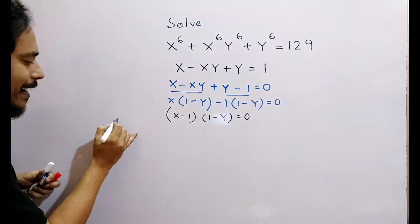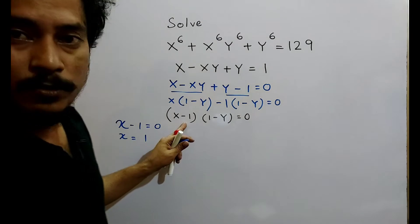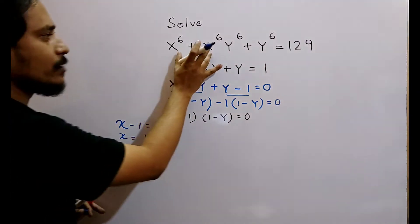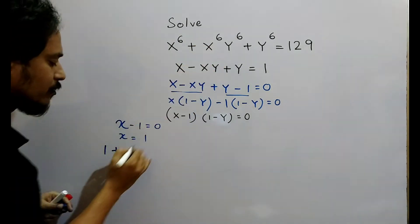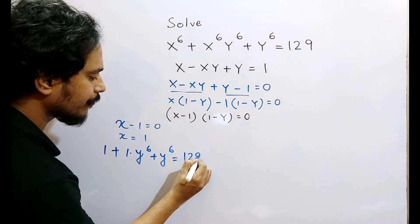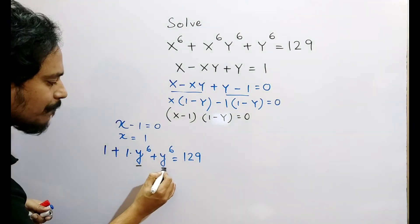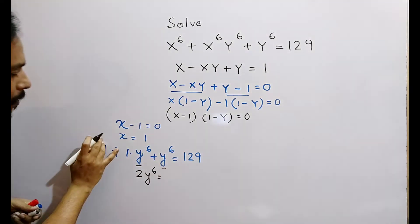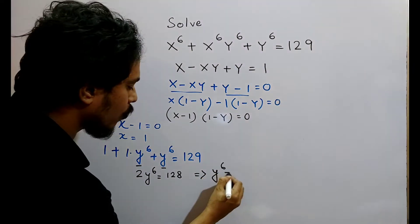When x minus 1 equals 0, then x equals 1. Now put the value of x into this equation. So the equation looks like 1 to the power 6, which is 1, into y to the power 6, plus y to the power 6, which is equal to 129. We can write y to the power 6 plus y to the power 6 as 2y to the power 6, and 129 minus 1 is 128. So we can write y to the power 6 which is equal to 64.